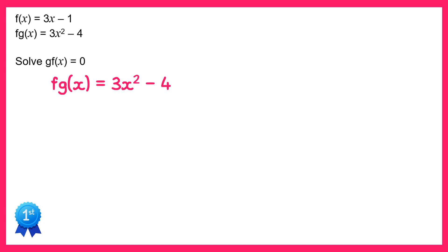fg of x could be thought of as f of g of x. This means we write out the f function but instead of the input x we have g of x. So if we write out the f function again, which is 3x take away 1, we're told that in the question, but replace all of the x's with g of x.